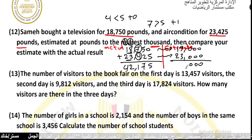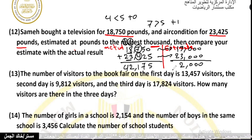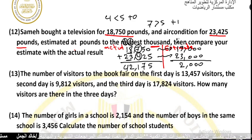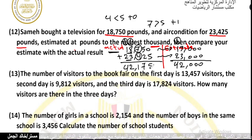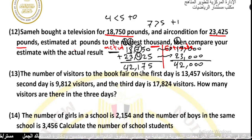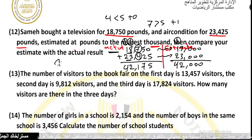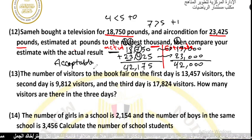Adding the estimates: 19,000 plus 23,000. 9 plus 3 equals 12, write 2 carry 1, 1 plus 1 plus 2 equals 4. The estimate is 42,000. The actual is 42,175 and the estimate is 42,000, so the estimate is acceptable.